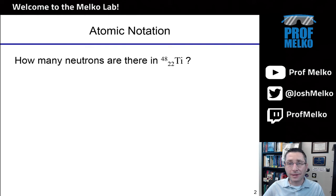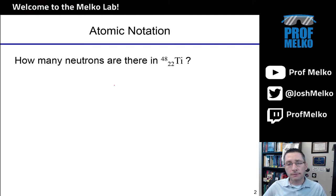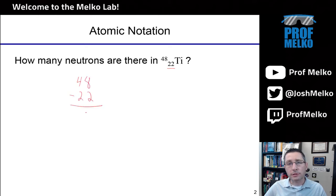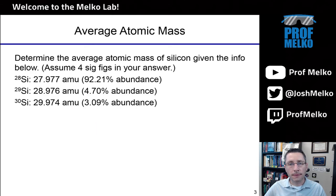You can pause the video at any time and try these yourself before watching me solve them. Next: atomic notation — how many neutrons are in 48/22 Ti? Ti is titanium, with 22 protons. Remember, the number of neutrons is always the top number minus the bottom number — the difference between the mass number and the atomic number. So the number of neutrons N₀ is 48 minus 22, which is 26.